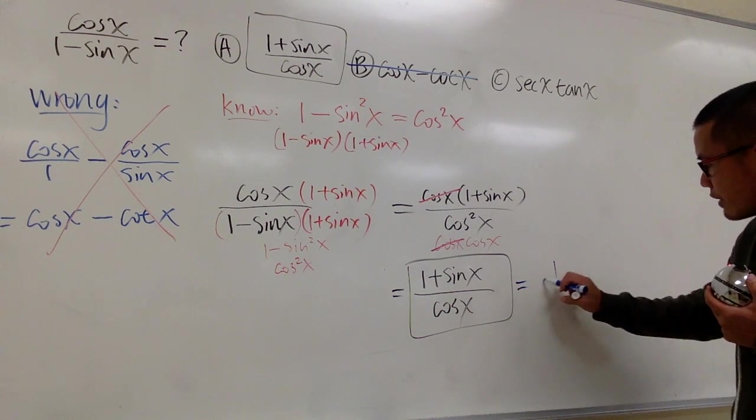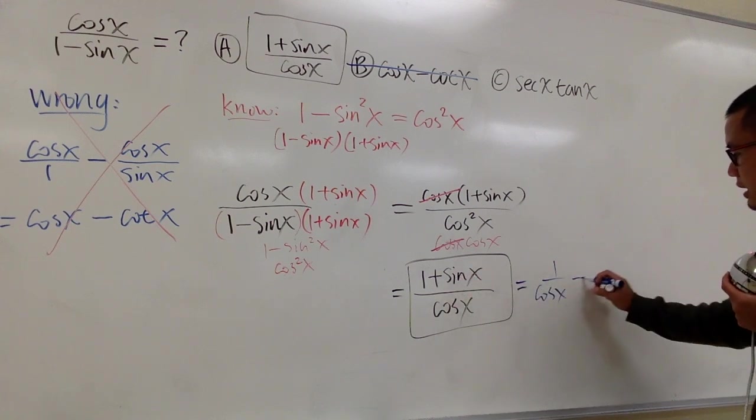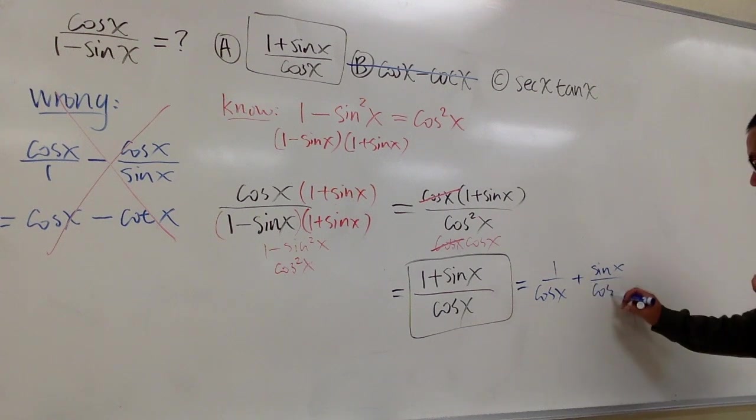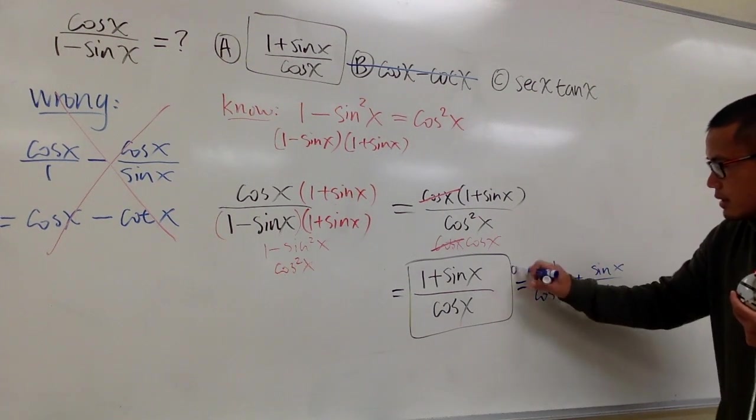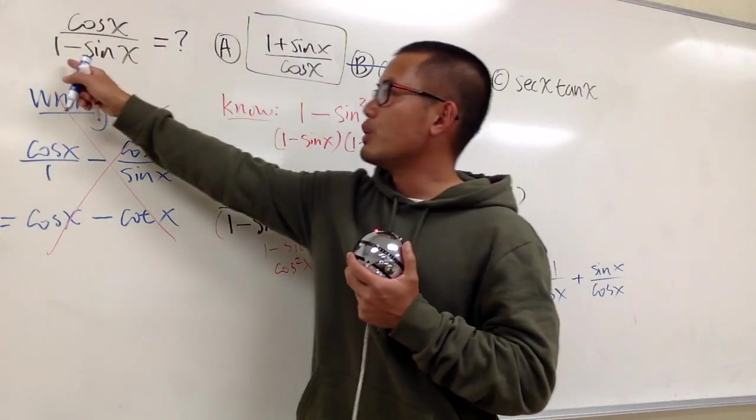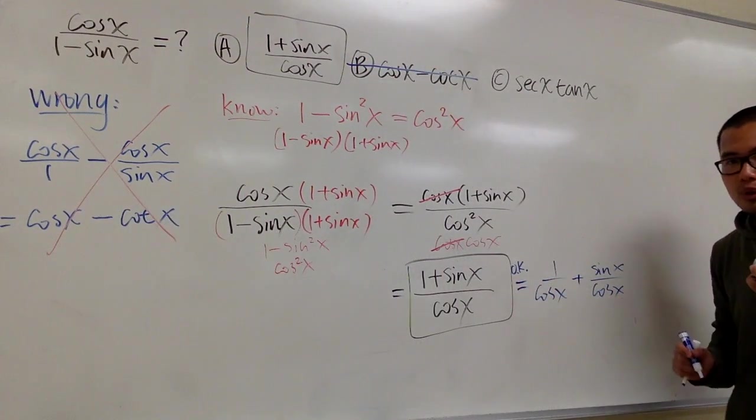So this is the same as 1 over cosine x, and then plus sine x over this denominator, cosine x. This right here is correct. This is okay for us to do. Earlier, when we have two terms on the bottom, we cannot split the fraction. But this right here was okay.